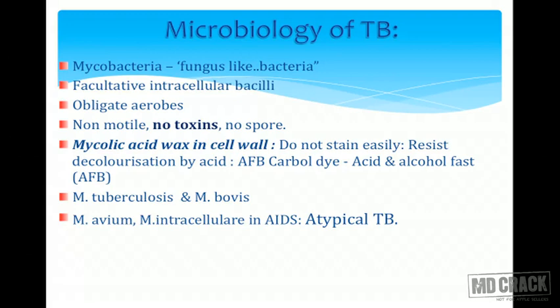Because of this mycolic acid wax in the cell wall, this bacillus will not take any ordinary stains. We use the acid-fast bacillus stain, also called the Ziehl-Neelsen stain. This bacillus resists decoloration by acid, so we use a stain called carbol fuchsin with strong acids — that is why we call it an acid-fast bacillus.